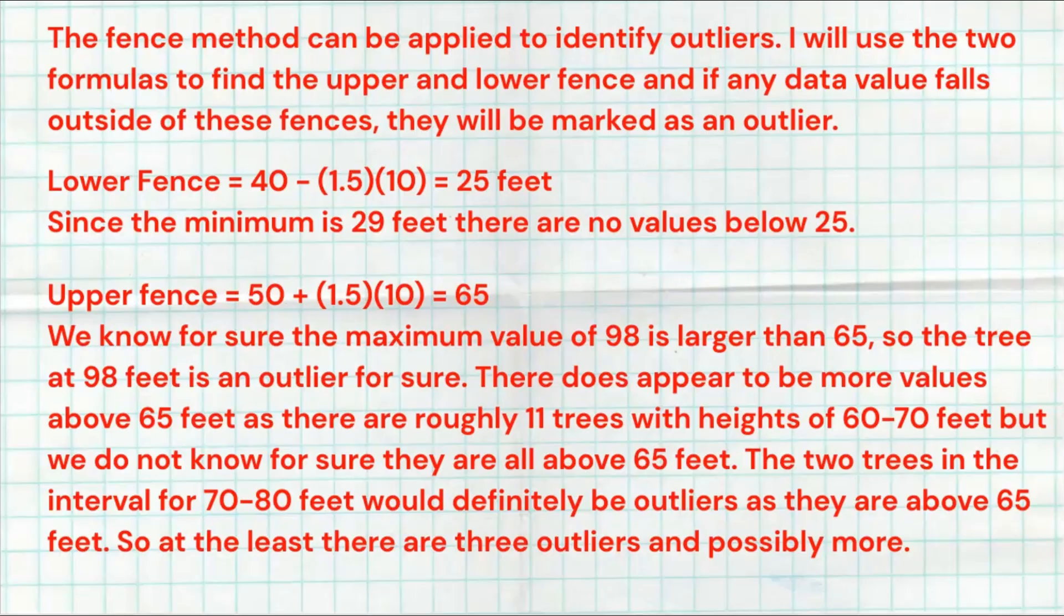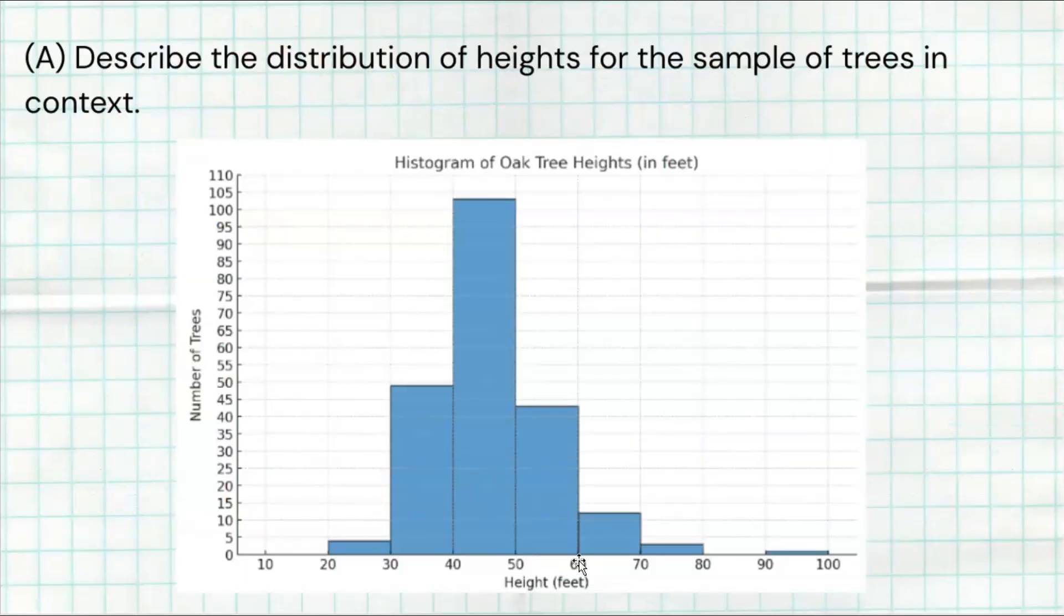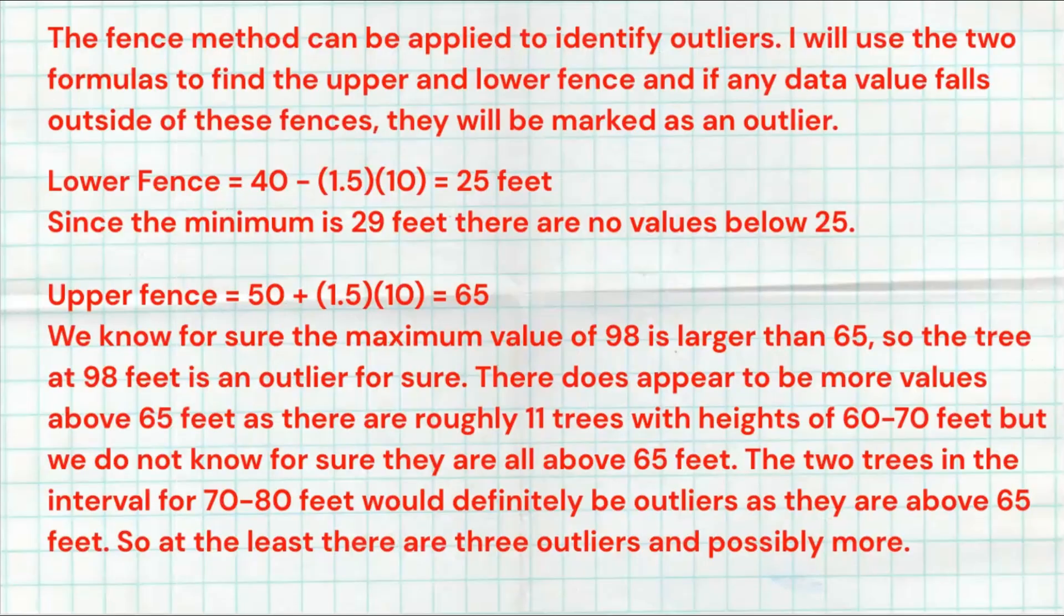Then I found the upper fence, 50 plus 1.5 times the IQR of 10, and I got 65. We know for sure the maximum is 98 is going to be an outlier. But there are a couple other values that potentially could be outliers. In the bin 60 to 70, we don't know what those values are. 65 is right about here. All of the values in this bin could be between 60 and 65. So there might be some outliers in here, but we're not 100% sure. But this value in here looks like there's about two of them from 70 to 80, those are definitely going to be outliers for sure. So I know there's probably three outliers for sure. There could be more, but without knowing the exact values in that 60 to 70 bin, I don't know for sure. I explained the process, I showed my work, I was very detailed in giving that answer in context.